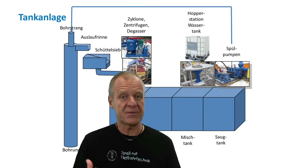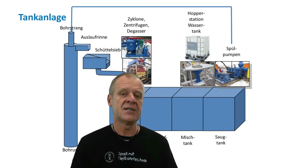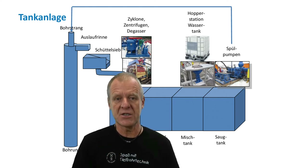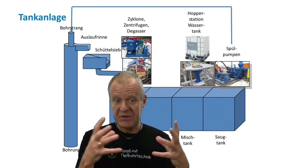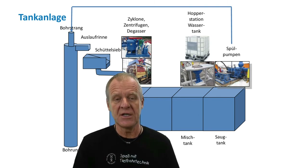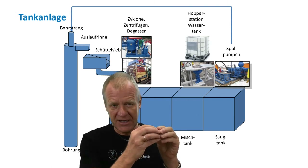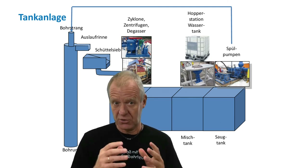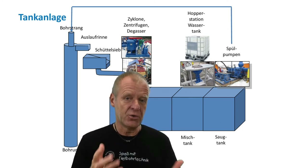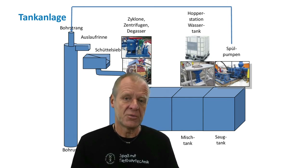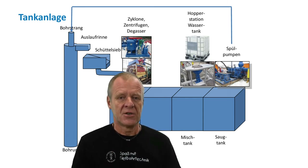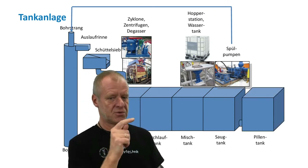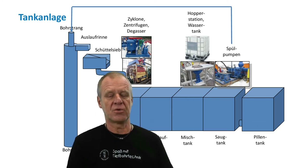However, not only drilling mud is pumped into the borehole. Sometimes we have to pump a so-called pill into the borehole. Such a pill can be, for example, a viscous liquid pumped like a plug to thoroughly clean the borehole when required. Or sometimes a greasy pill might be pumped to free a stuck pipe in the borehole. Those pills are prepared in what we call a pill pit. From the pill pit, it is moved into the suction tank, and from there into the borehole as required.